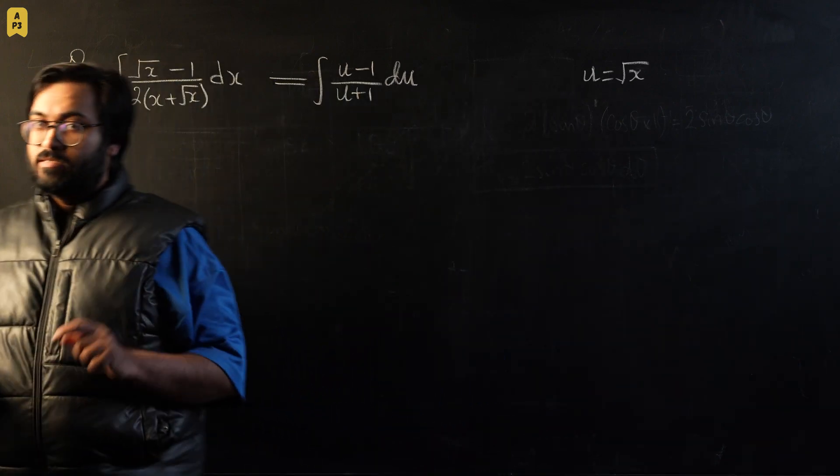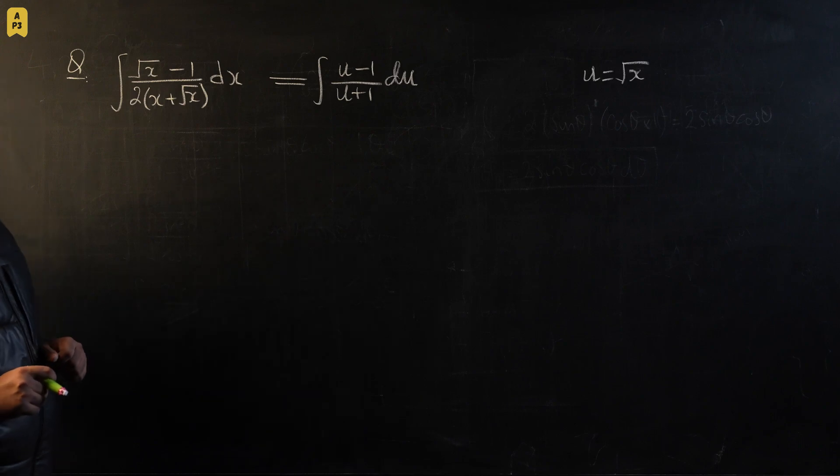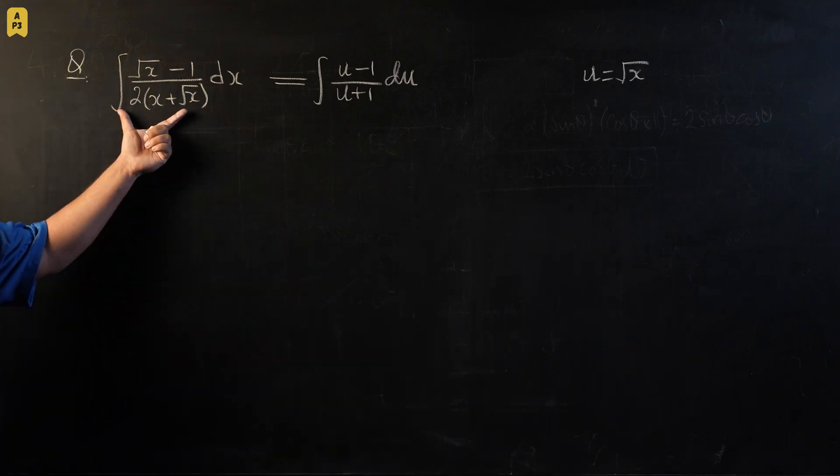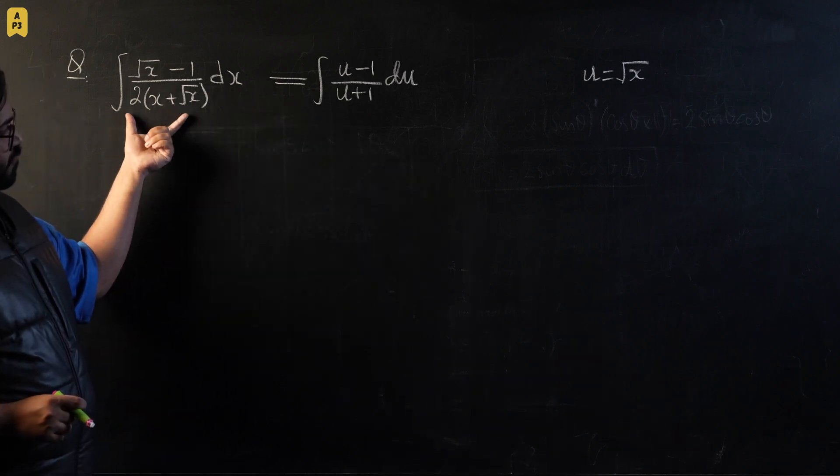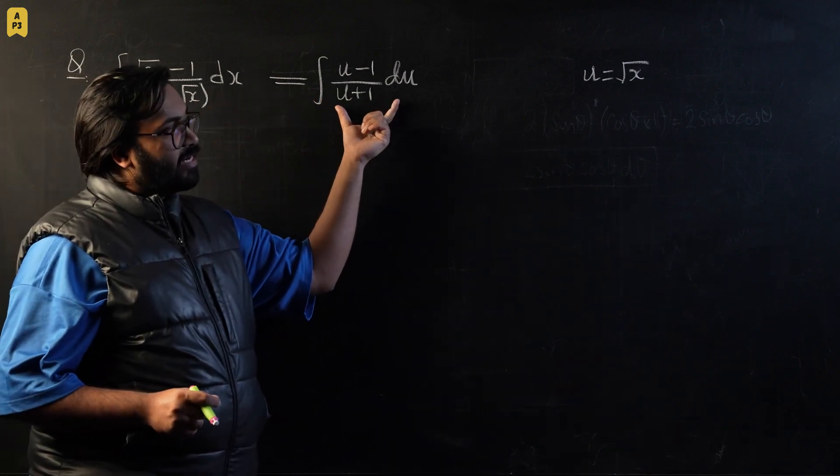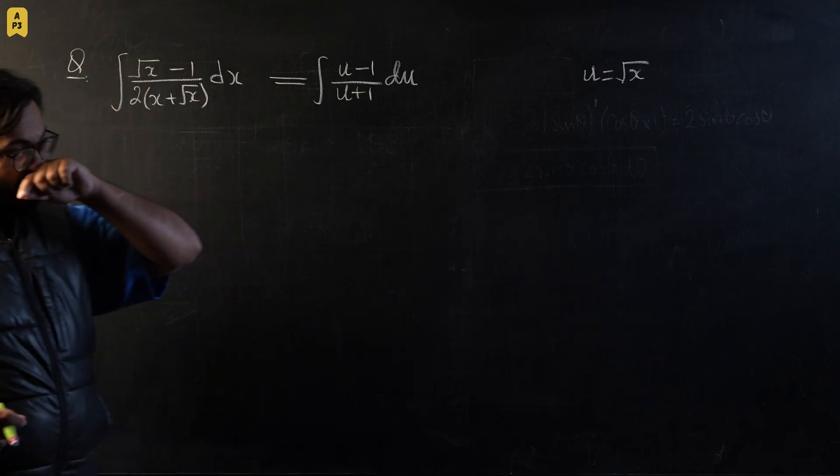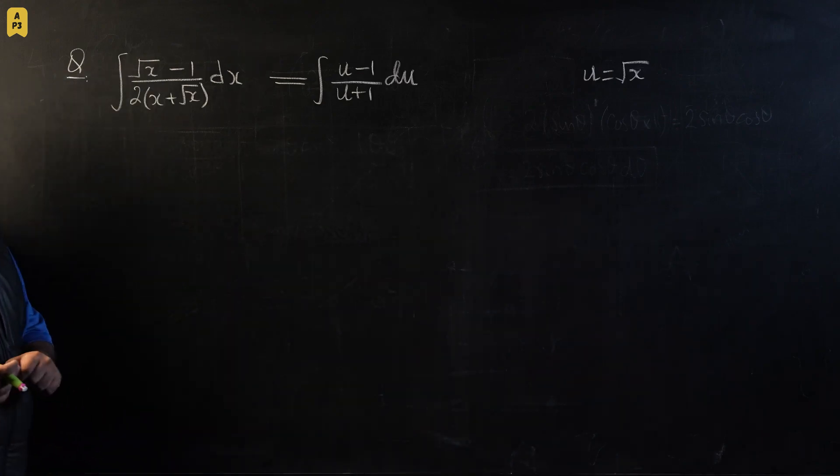Just have a look at the question first, then give it a try, then you can watch the solution later on. So you have to integrate this function and you have to show before integration where you have to make a successful substitution and bring it to this form. The substitution that you're given is u equals square root of x.